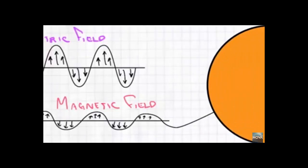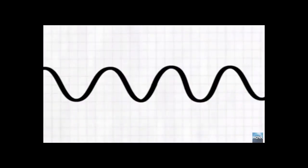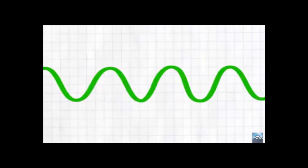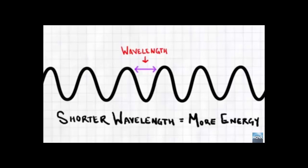Even though they travel at the same speed, not all photons pack the same punch. Those that carry more energy oscillate more quickly, with a shorter distance between the crest of each wave. This distance between one crest and another is known as the light's wavelength, and the shorter it is, the more energy the light carries.